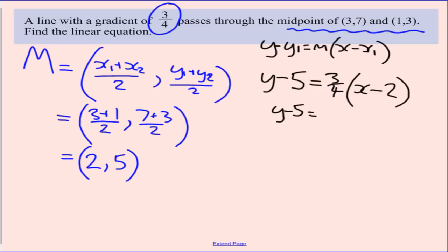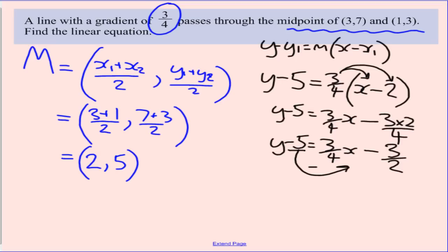y minus 5 equals, expand this brackets, 3 quarters times x is just 3 quarters of x, and 3 quarters times a negative 2 is minus 3 times 2 over 4. Cleaning this up a bit, y minus 5 is equal to 3 quarters x minus 6 over 4, which can be simplified down to 3 over 2. Then, the last thing we need to do is move our negative 5 across by adding it.